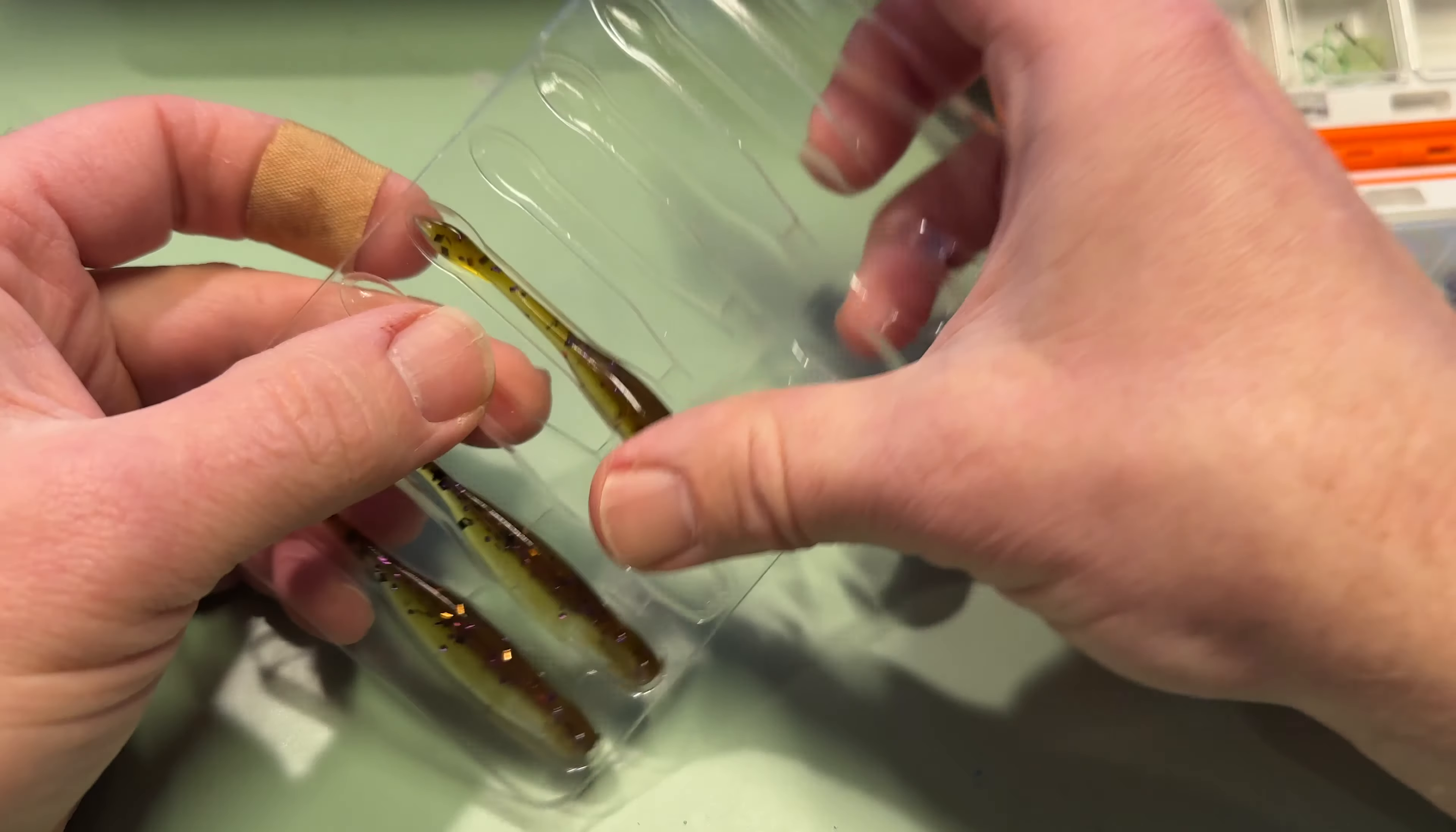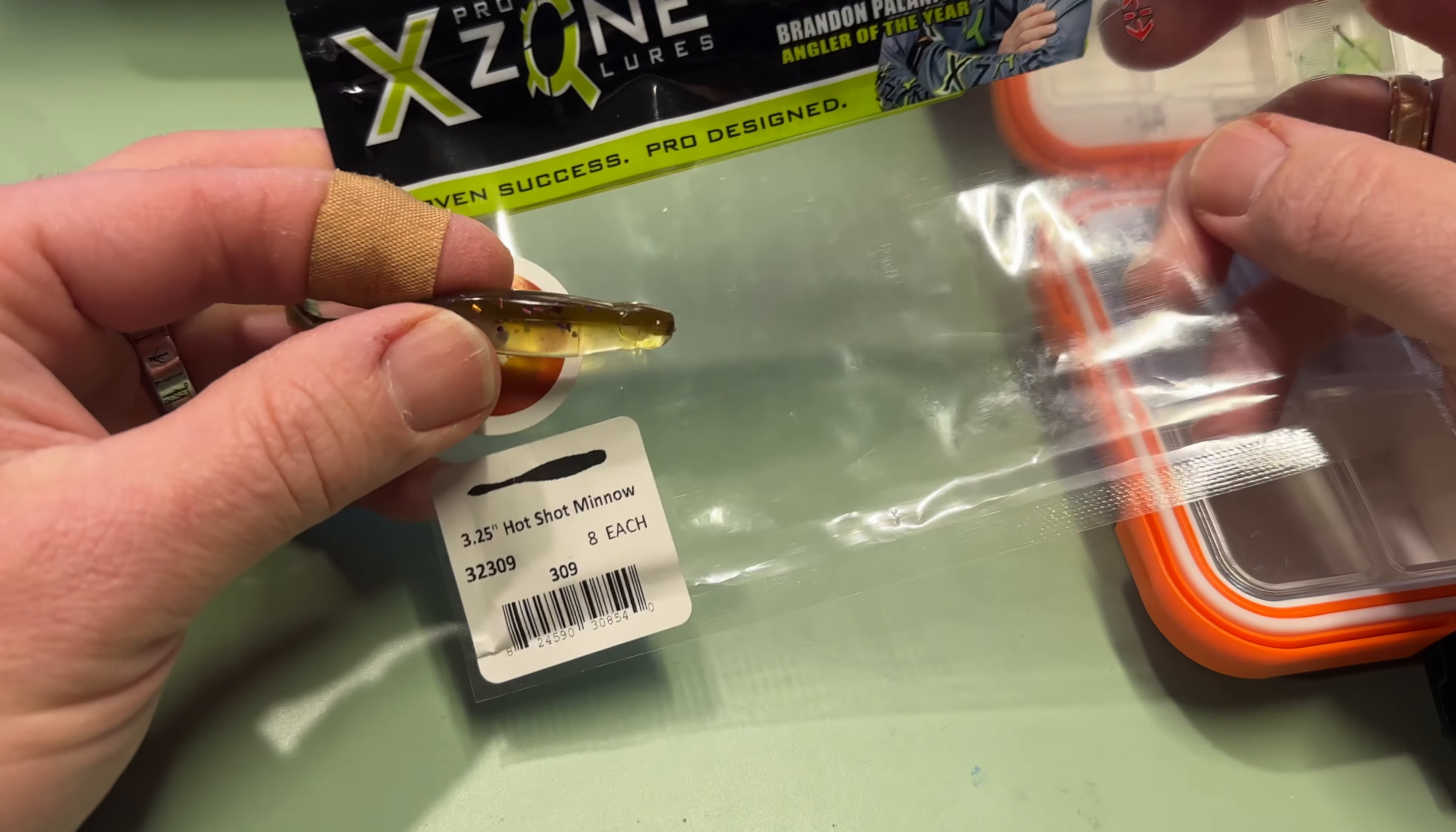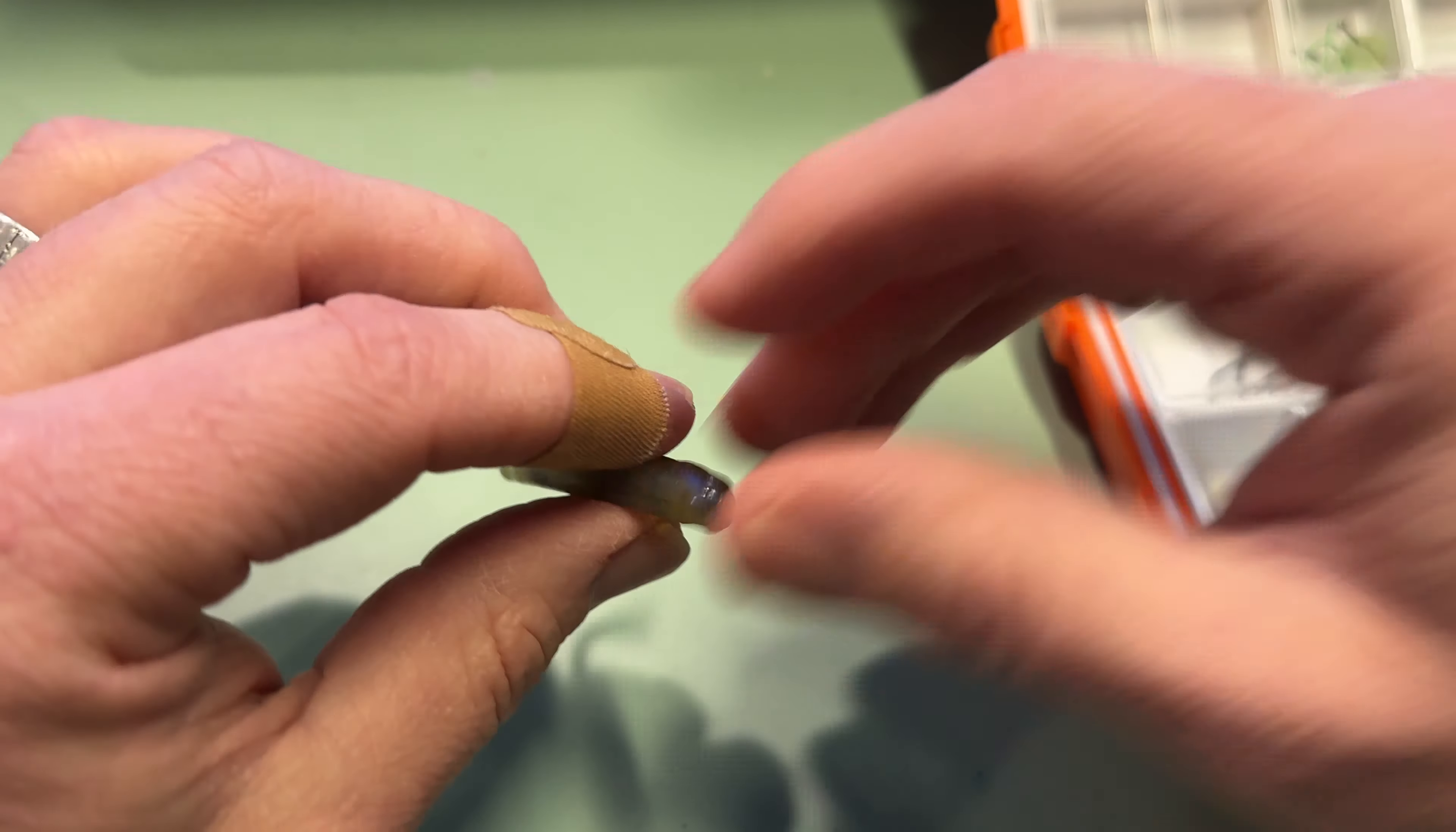Okay, take it out of the package. Grab one. Now this color right here, I think it's the 302, 309, whatever that means. But it's like a green pumpkin with like a blue in it and some sparkles. It's incredible. Fish love it. They love it a lot.